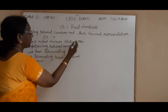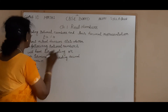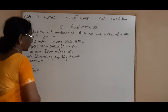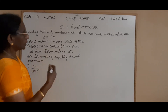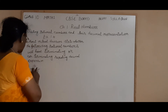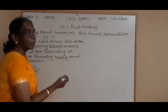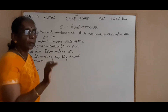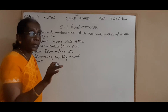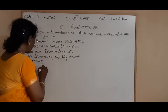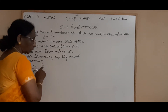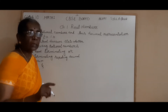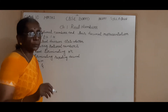Without actual division, state whether the following rational numbers will have a terminating or non-terminating repeating decimal expansion. You should not perform the actual division. The first sum is 13 by 3125. We have to check whether the decimal expansion of this number is terminating or non-terminating repeating. What should you do? Check the denominator. The prime factors of the denominator Q should be only 2 to the power N into 5 to the power M, where N and M are non-negative integers.